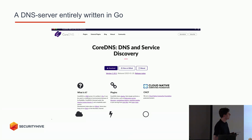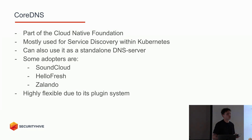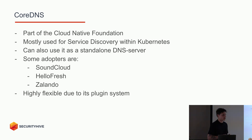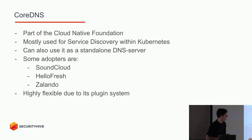CoreDNS is a DNS server, so it's responsible for providing DNS. It's part of the Cloud Native Foundation and it's mostly used as a replacement for kube-dns within your Kubernetes environment. It has a few benefits compared to kube-dns — that's why a lot of companies like to switch. You can also use it as a standalone DNS server within your home environment to do some ad blocking, which we're also going to do at the end. Some adopters I found in the CoreDNS repository are SoundCloud, HelloFresh, and Zalando. Its popularity is mainly due to its plugin system.